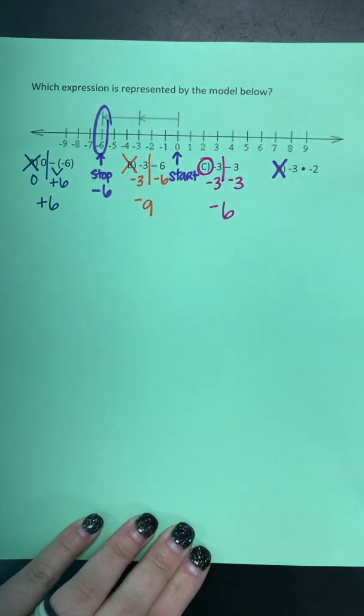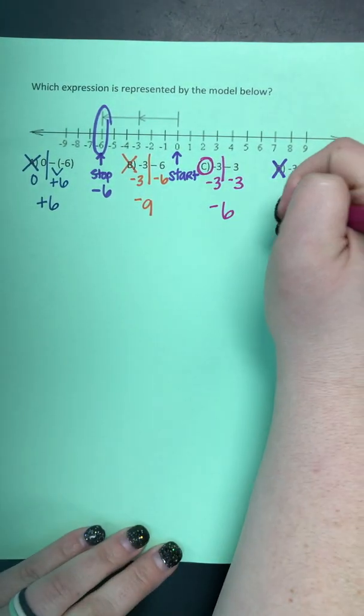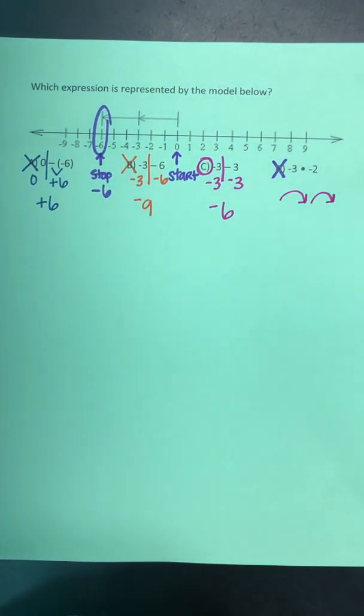Straight arrowed lines mean add and subtract. And then hops, like this, would indicate multiply or divide.